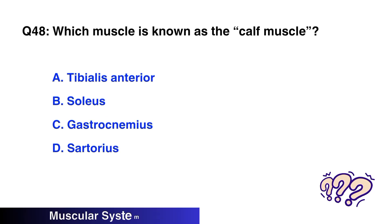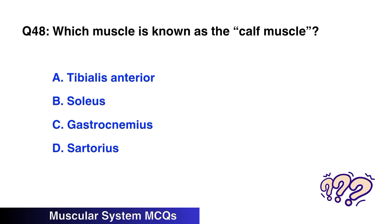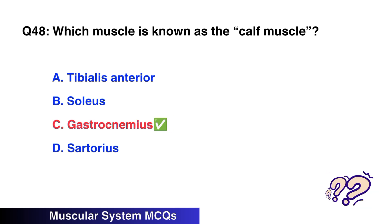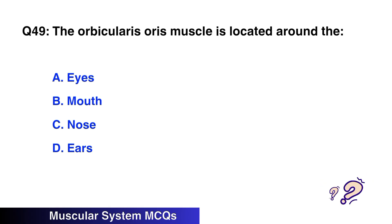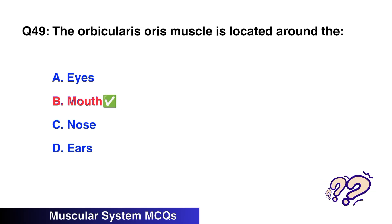Question No. 48: Which muscle is known as the calf muscle? The right option is C: Gastrocnemius. Question No. 49: The orbicularis oris muscle is located around the — the right option is B: Mouth.